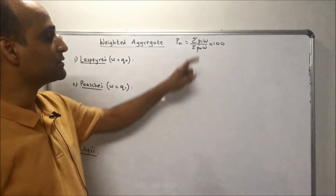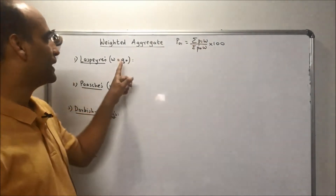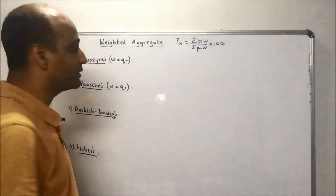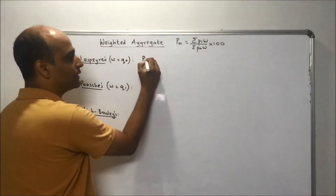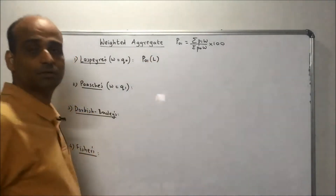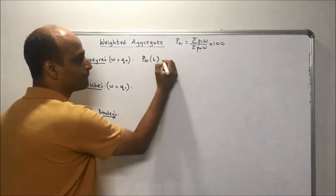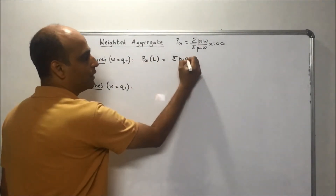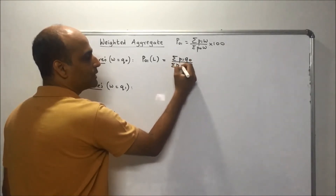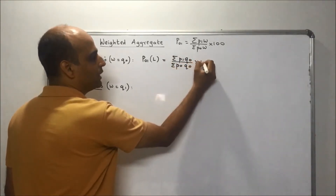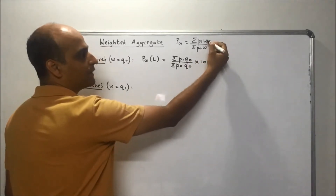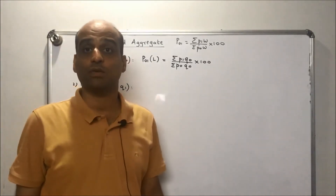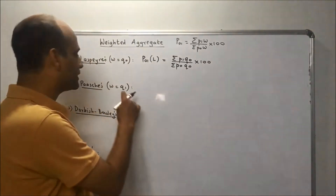If you replace w by q0, you obtain the Laspeyre's formula. The Laspeyre's price index is summation p1·q0 upon summation p0·q0, multiplied by 100. The weightage here is q0, because Laspeyre's price index gives weightage to the base year quantity.